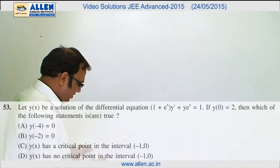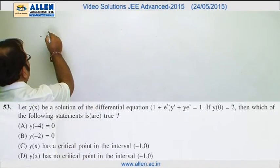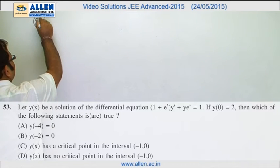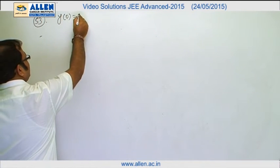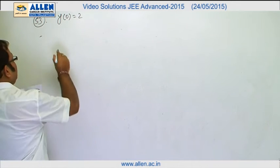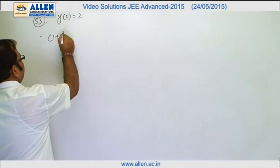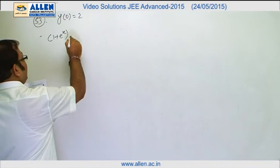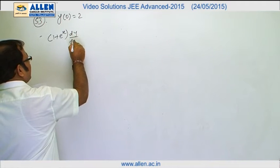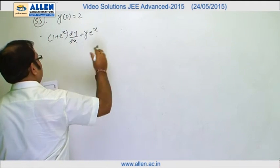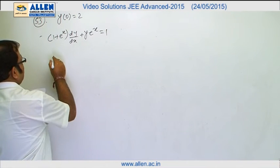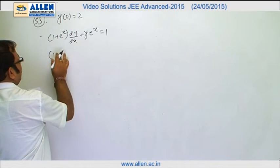In question number 53, we are basically provided with a differential equation with the initial condition that y(0) = 2, and the differential equation is (1 + e^x)dy/dx + ye^x = 1.